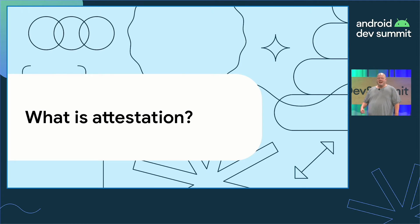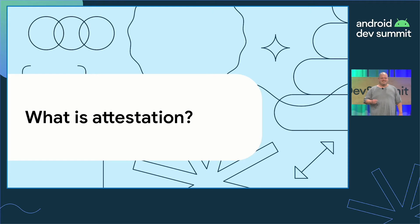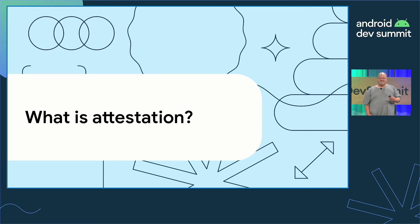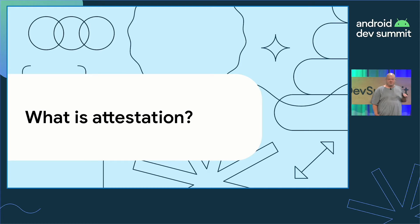Device attestation allows developers to learn about the security of devices' current environment. It should be used each time a device requests access to potentially sensitive information. The attestation response helps developers decide how risky it would be to access the information. Within Android, the key attestation API is an anti-abuse API that allows developers to assess the Android device their app is running on.